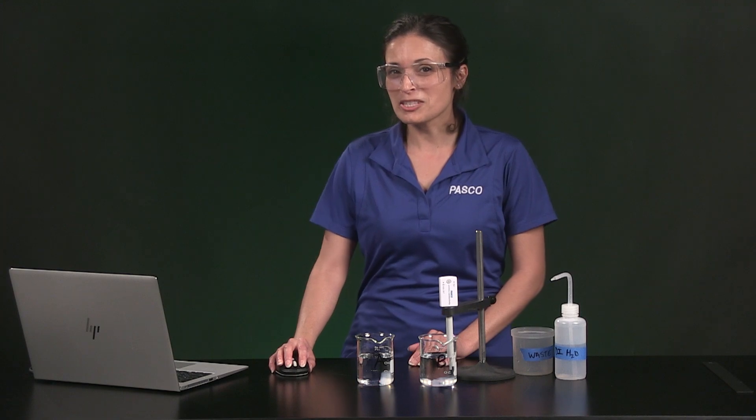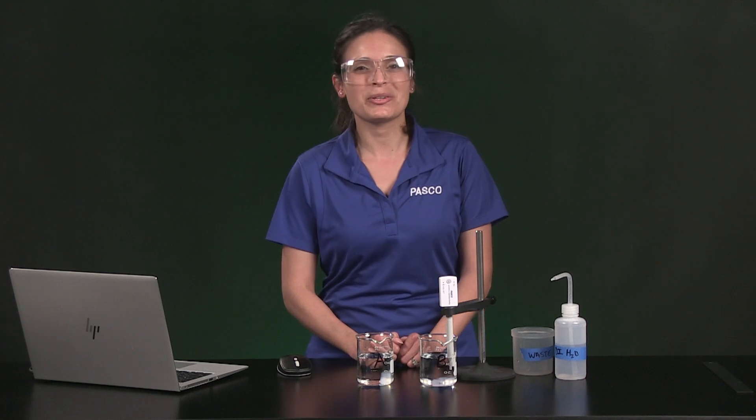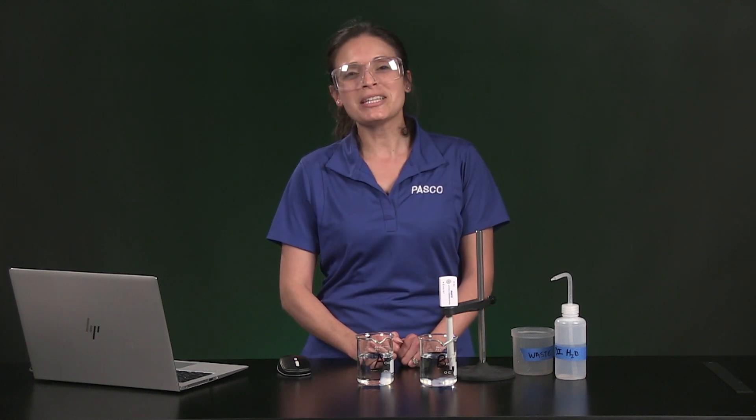You can make run 1 visible again by checking the box in the legend. Make sure you move the red box in the legend to the run you want to analyze. You now have enough information to complete the analysis and answer the questions.